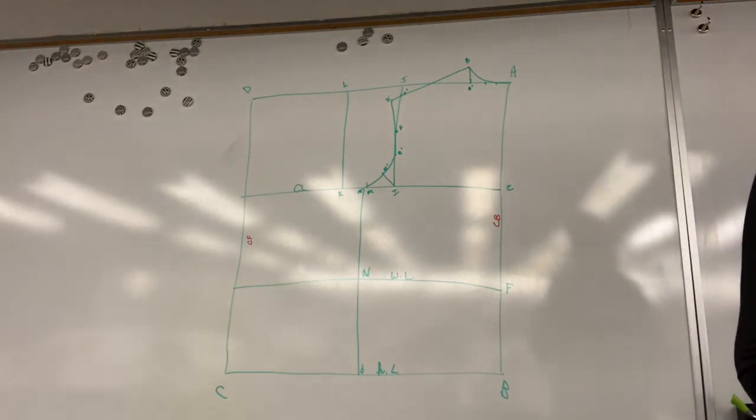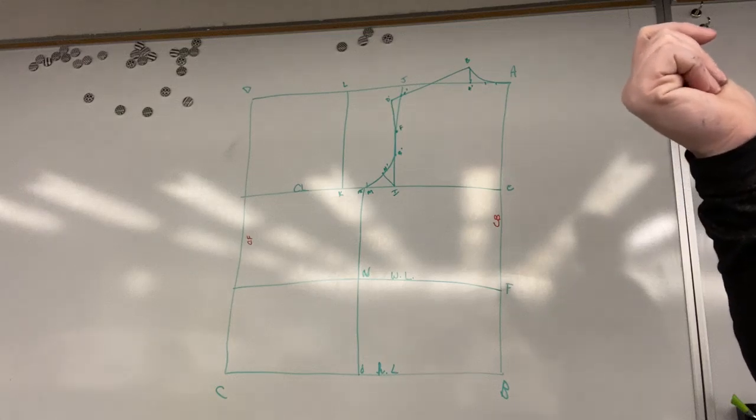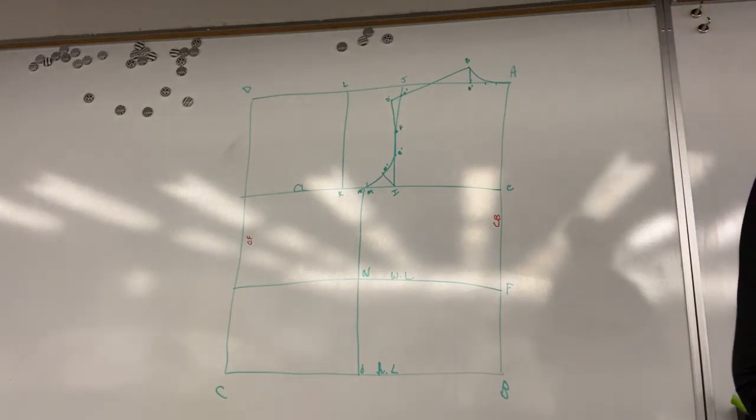And then we're going to take an armseye circumference measurement on the paper before we transition to the sleeve, just to make sure that our cap line in the sleeve will fit in this opening and we don't have too many sleeve complications.